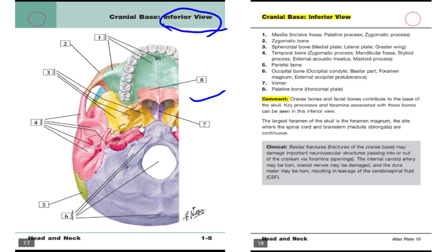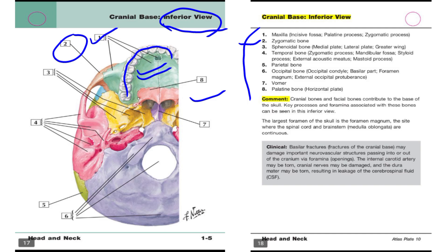We have eight labels we will discuss one by one. Label one: this bone is the maxilla — these are the upper teeth and this bone in green color is the maxilla. The second label, in peach orange color, is the zygomatic bone. The third label, in yellow color, is the sphenoidal bone.